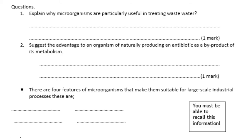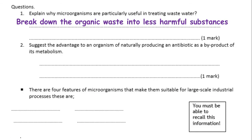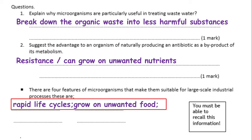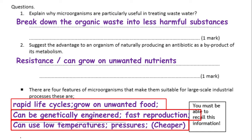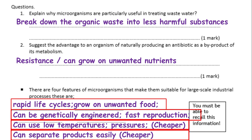A couple of questions here to think about - you can pause and have a go. There are more than four reasons why microorganisms make them suitable for large-scale industrial processes. The ones in the red boxes are really important: a massive advantage is that we can grow them on unwanted food products, they can be genetically engineered, and they have fast reproduction, so we can get a lot of product very quickly.